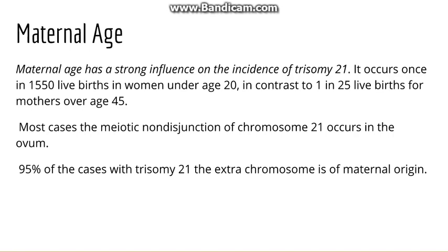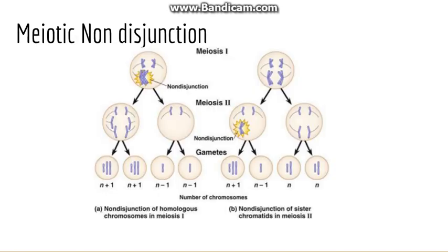Firstly, going to the trisomy of 21st chromosome. The trisomy of the 21st chromosome is very much related to maternal age, so much so that it occurs once in 1550 live births under the age of 20 in women, whereas it occurs around 1 in 25 live births over the age of 45.